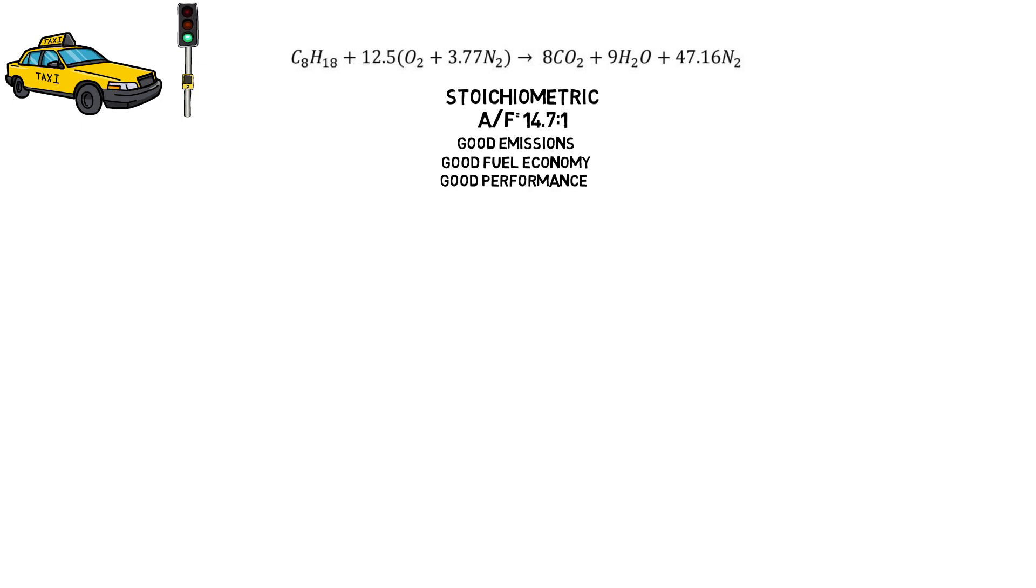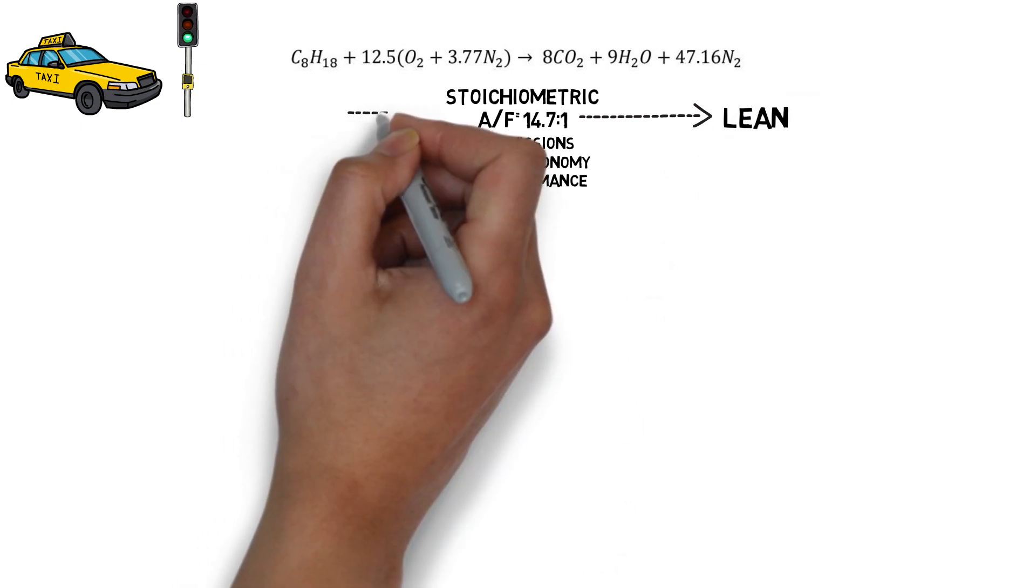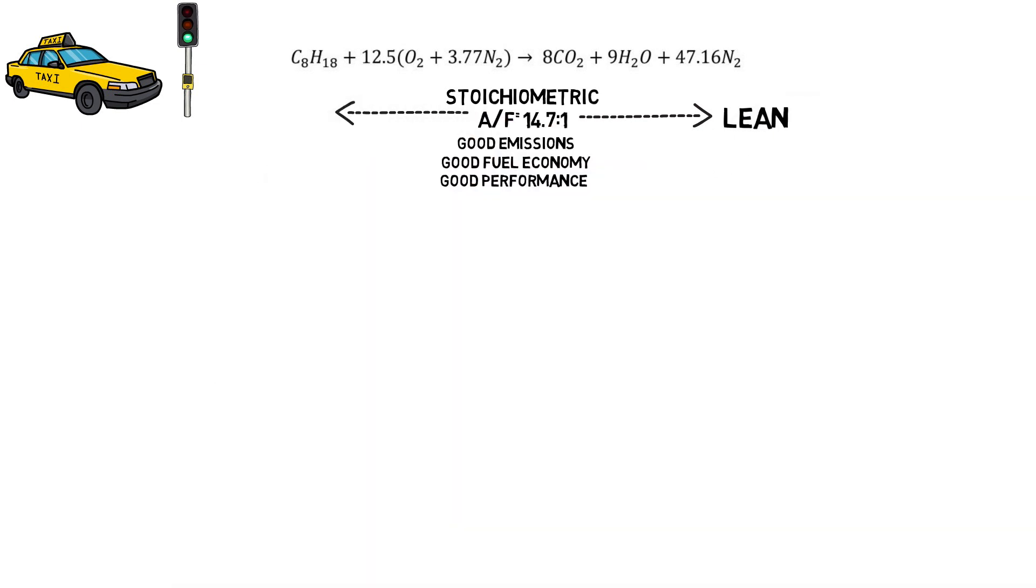However, depending on the priority, it is not always ideal to run stoichiometric, and therefore air-fuel ratio is dynamic and changes in response to operating conditions. If the ratio is larger than 14.7, the mixture burns lean. On the contrary, when the ratio is lower, combustion burns rich.